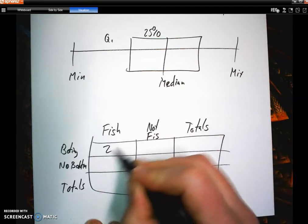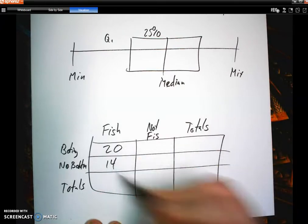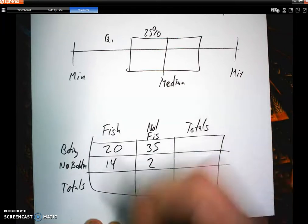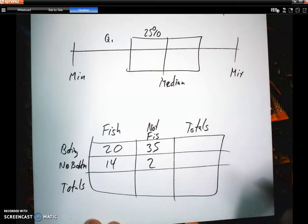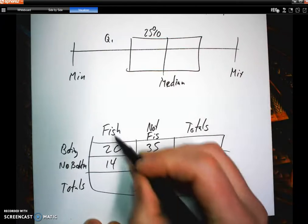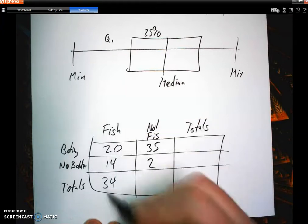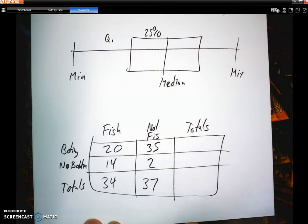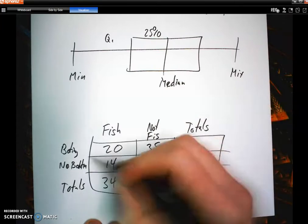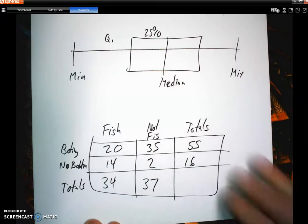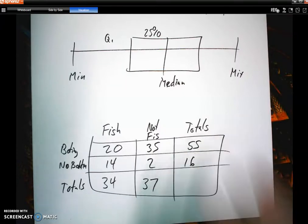And let's say 20 say this and 14 say that, and 35 say this and 2 say that. So you got to total these up and answer some questions based off of those totals. Like 34 people like to fish, 37 people don't like to fish, whereas 55 people love to boat, whereas 16 people do not, and your total adds them all up. So those two-way tables, for sure, you're going to be seeing stuff like that.